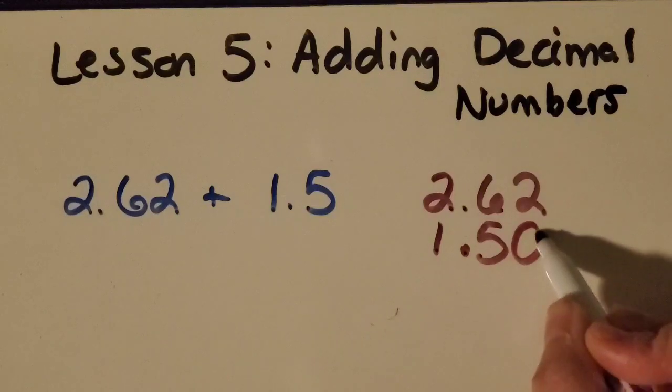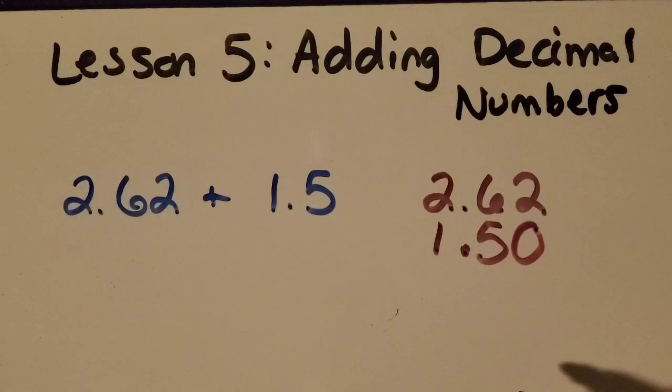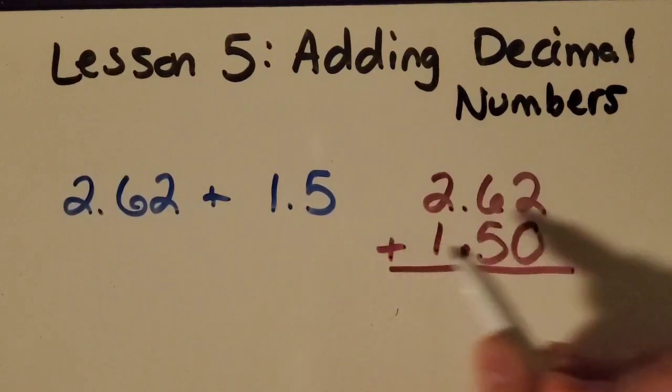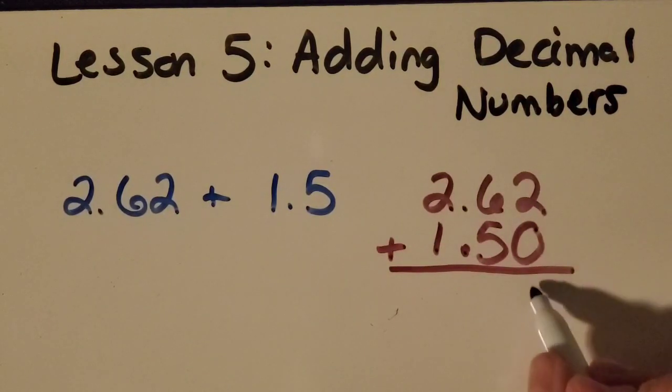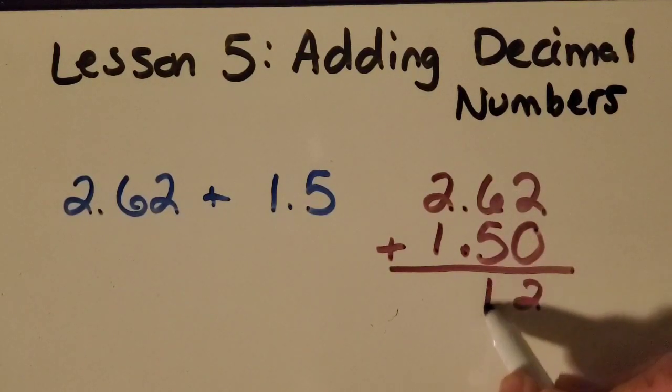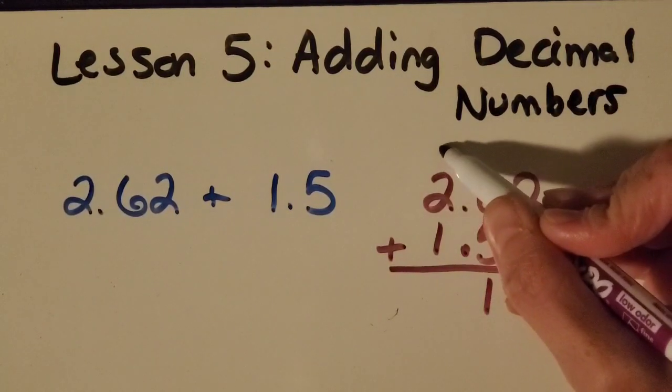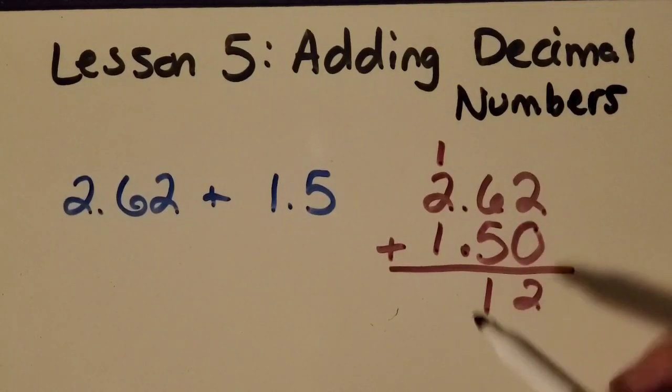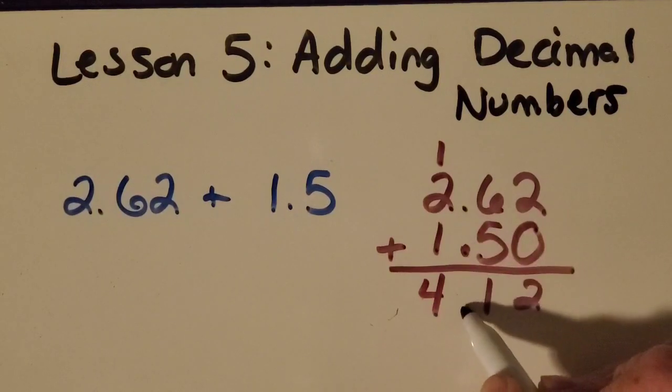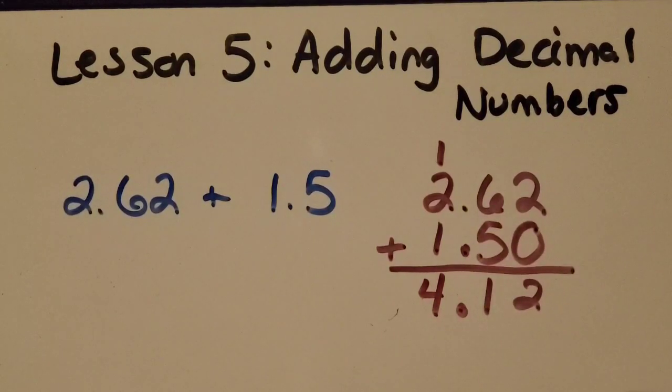Okay, you got it. 0 doesn't change the value. The 5 is still in the tenths place. Now I can add. Okay, 2 plus 0 is 2. 6 plus 5 is 11. And we already know a lot about regrouping. 1 plus 2 plus 1 is 4. And bring down my decimal point. So my answer is 4 and 12 hundredths.